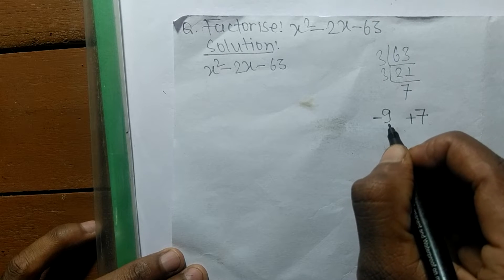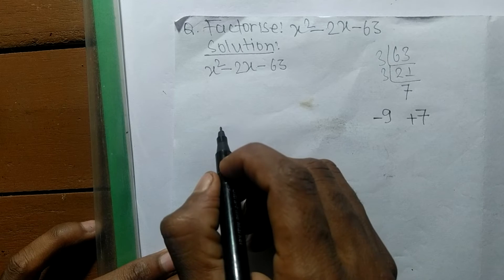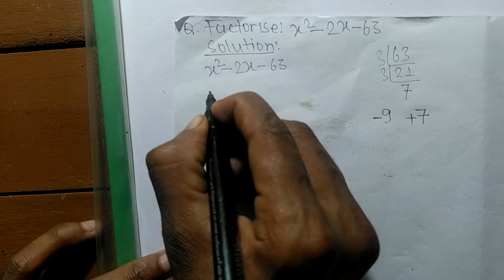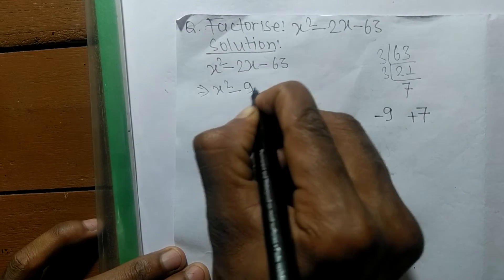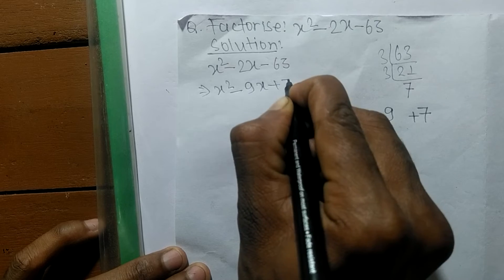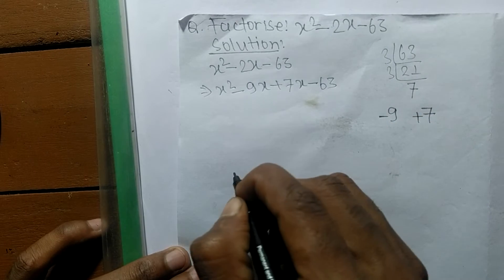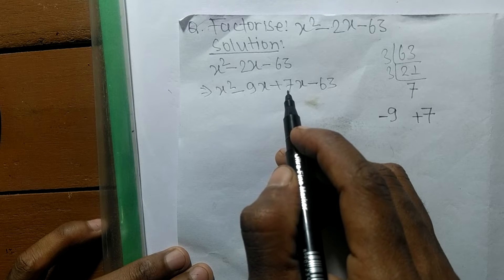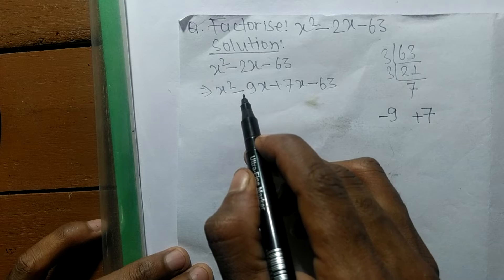So we can write it x square minus 9x plus 7x minus 63. So minus 9x plus 7x means the result is minus 2x, like as minus 9 times plus 7 means it is equal to minus 63.